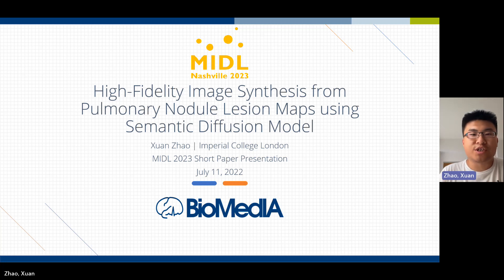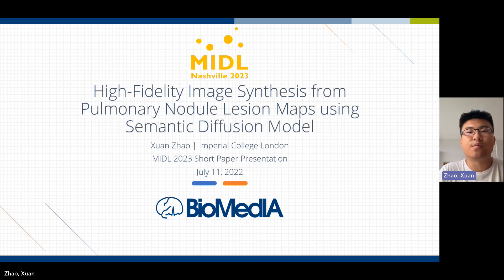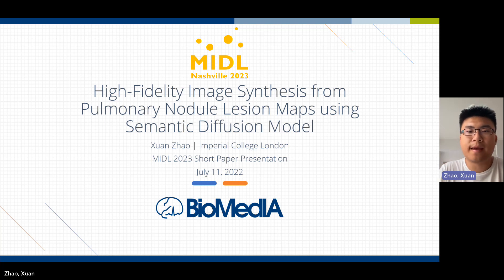The nodule detection task involves determining whether a cropped 32x32 patch is a nodule or not, and we choose to use the Squeeze-and-Excitation ResNet as the architecture. The nodule localization task involves locating the bounding box of the nodule on the slices, and we choose Faster RCNN as the architecture.